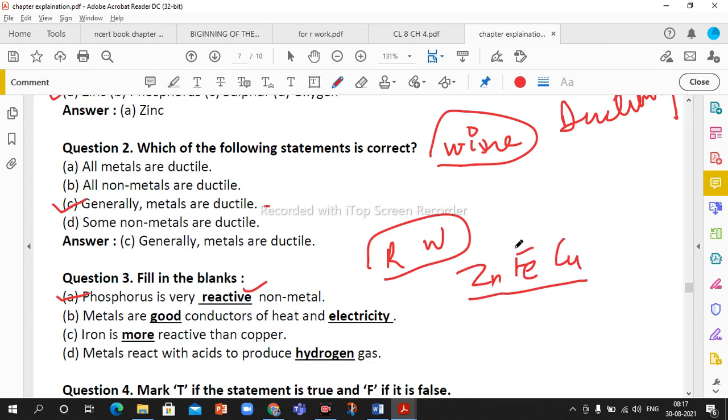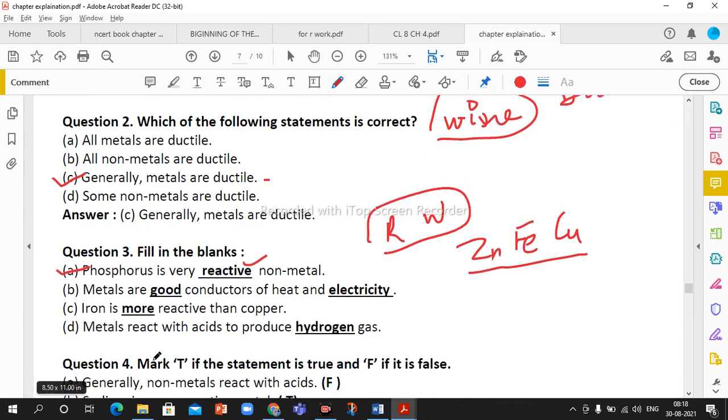So here we can say iron is more reactive than copper. Metals react with acid to produce hydrogen gas. When we do the reaction of metal with hydrochloric acid, metal chloride will form and hydrogen gas will be released.